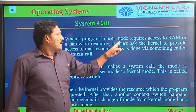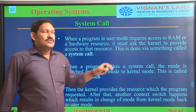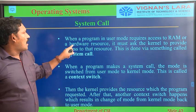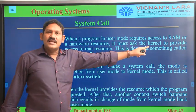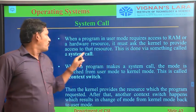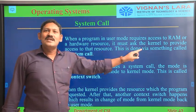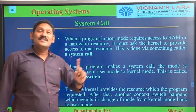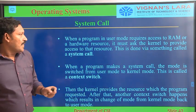When a program in user mode requires access to RAM or hardware resources, it must ask the kernel to provide access to the resource. This is done via something called a system call.